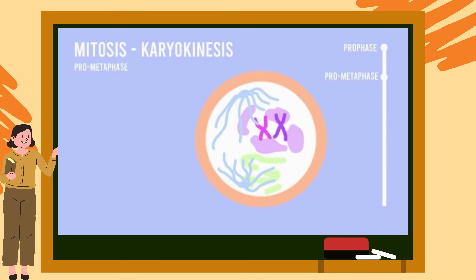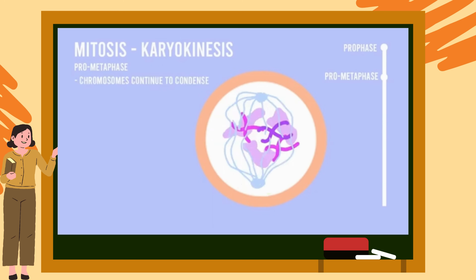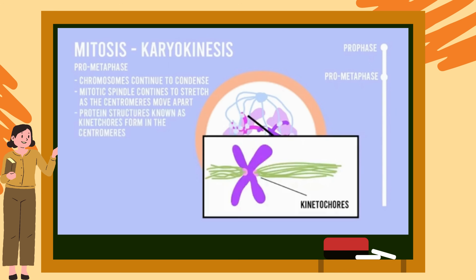After prophase, we have prometaphase. During prometaphase, the chromosomes continue to condense. The mitotic spindle continues to stretch across the nucleus as the centrosomes continue to move apart. A protein structure known as the kinetochore forms at the centromere of the chromosome and functions by attaching the chromosomes to the microtubules of the mitotic spindle.